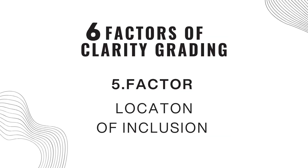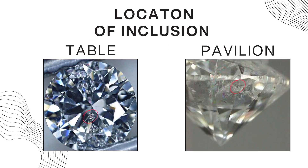The fifth factor is location — where exactly the inclusion is present within the stone. If an inclusion is at the top of the crown or the table, the location is very poor because everyone will be able to see it clearly. But if the inclusion is in the pavilion sector, people will not be able to see it, or only through a microscope. So location matters very highly.